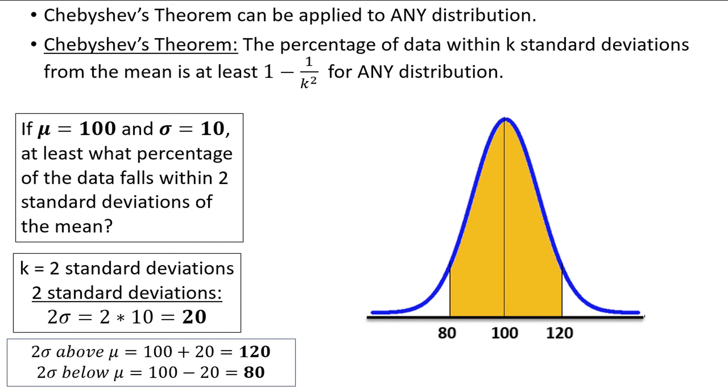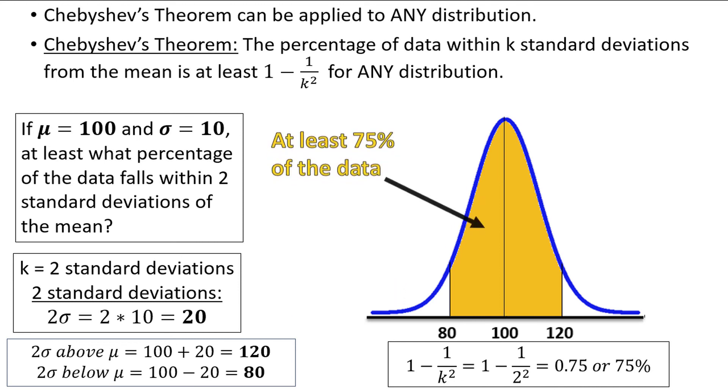Now we are ready to plug into the formula. 1 minus 1 over k squared is equal to 1 minus 1 over 2 squared, since k is 2. This comes to 0.75, or 75%. So at least three fourths, or 75% of the data, will fall within two standard deviations of the mean, or between 80 and 120.